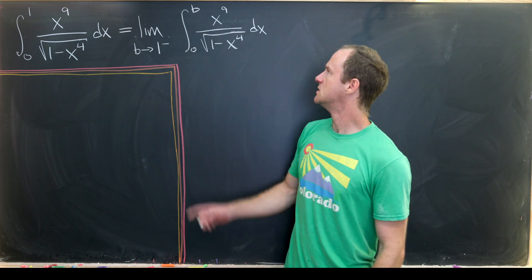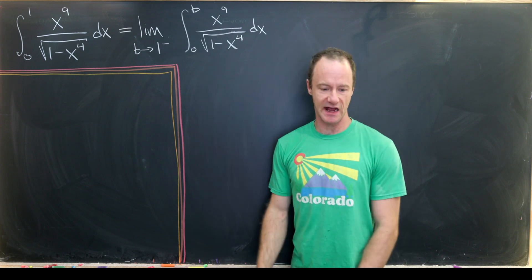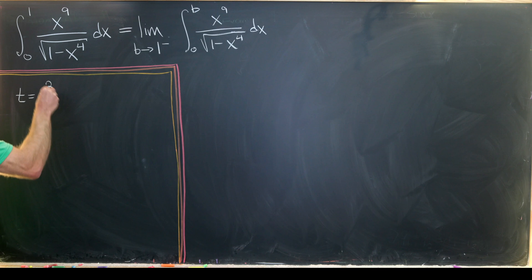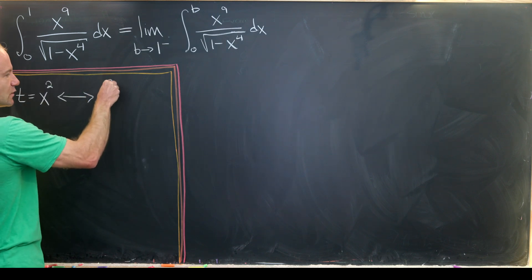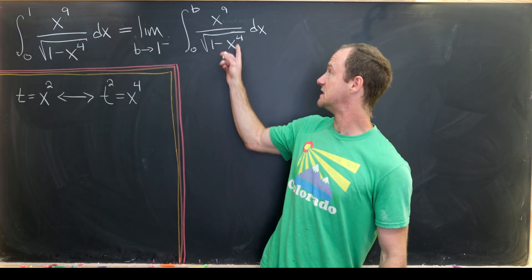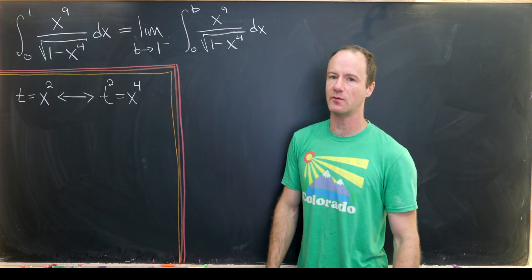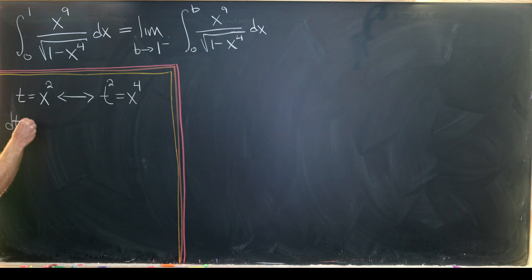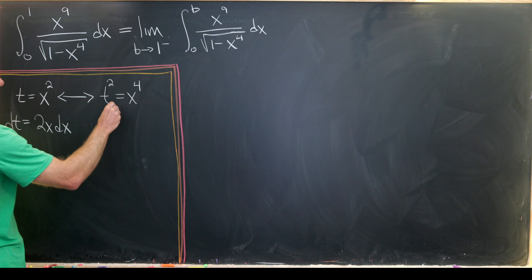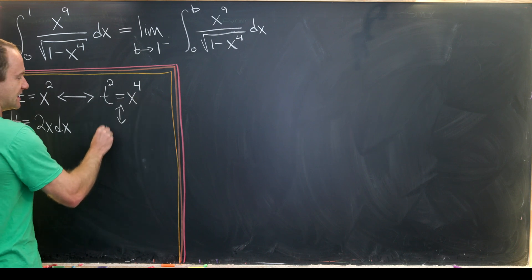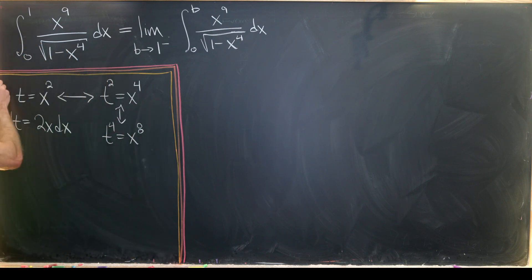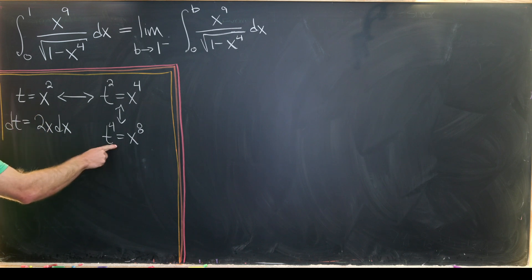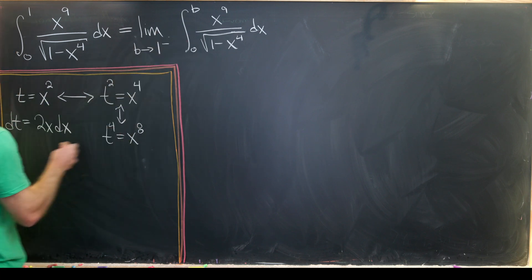Now we're ready to start our substitutions. The first thing to notice is that x^4 is really x² squared, which motivates us to make a substitution t = x². Notice that's equivalent to t² = x^4, so we'll have 1 - t² inside the radical, which will be helpful for a trigonometric substitution. Also notice dt = 2x dx. And if t² = x^4, then t^4 = x^8, which is helpful because x^8 times x equals x^9.